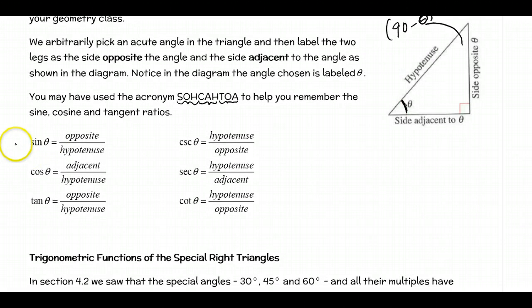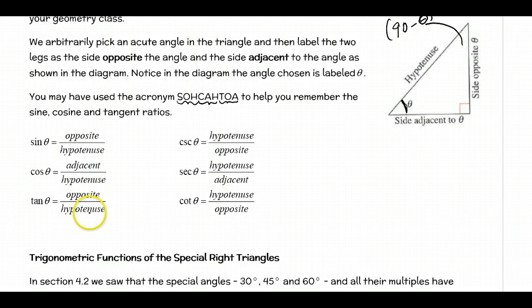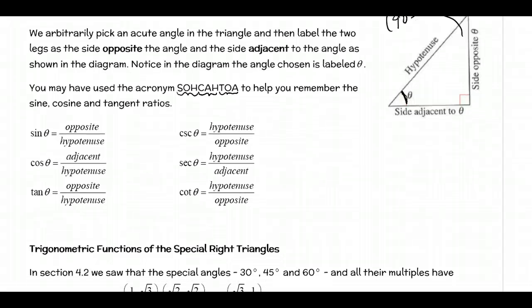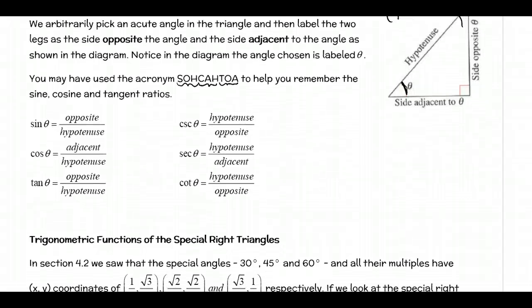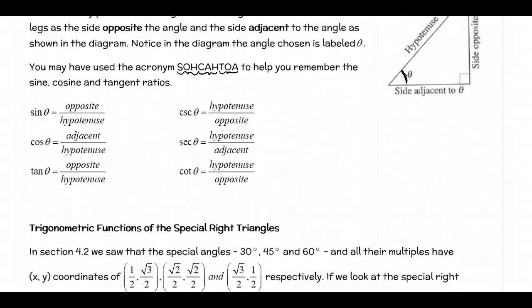Quick review from geometry: the sine is opposite over hypotenuse, the cosine is adjacent over hypotenuse, the tangent is opposite over adjacent. And of course we have our three reciprocal functions, which we also discussed in the other section.